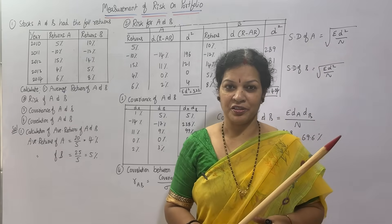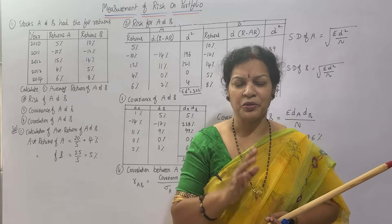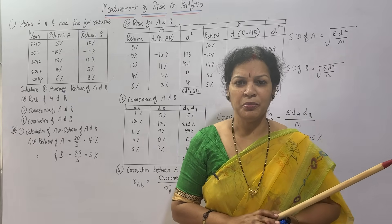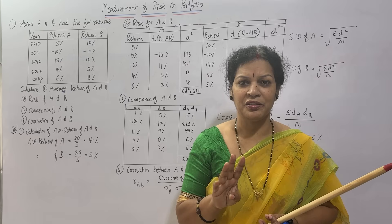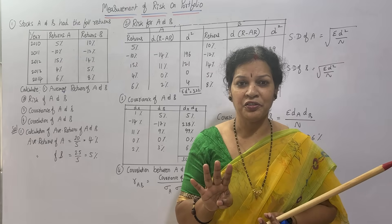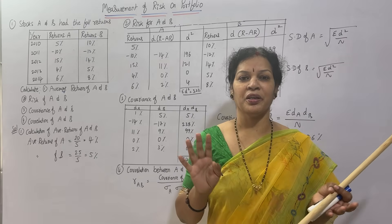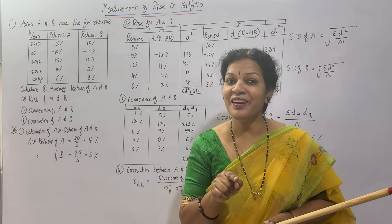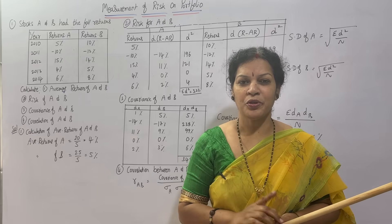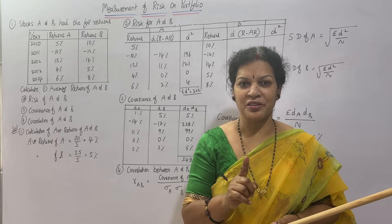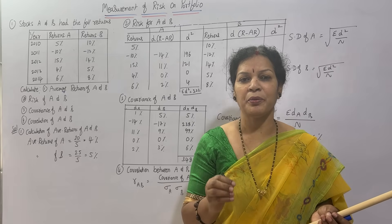How do we measure the risk? Risk is generally based on statistical methods only. Remember in statistics: average, standard deviation, covariance, and correlation. Same things we are going to calculate to measure the risk. Very simple. Just focus on one problem and I will make you understand. Same pattern problems — any number of problems you can find from your textbook.